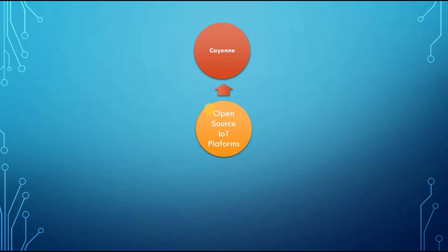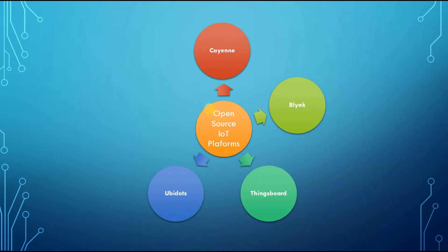The first one is KN from MyDevices.com. The second one is Blink. The next ones are ThingsBoard and Ubidots. And the final one is Ka-IoT platform. We will see more about the details on these platforms and their key features.